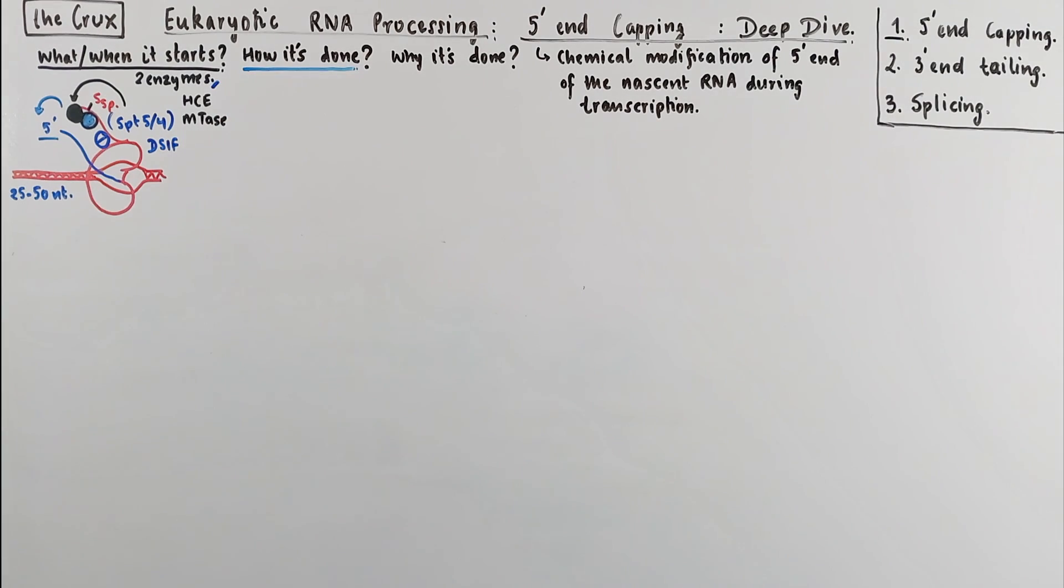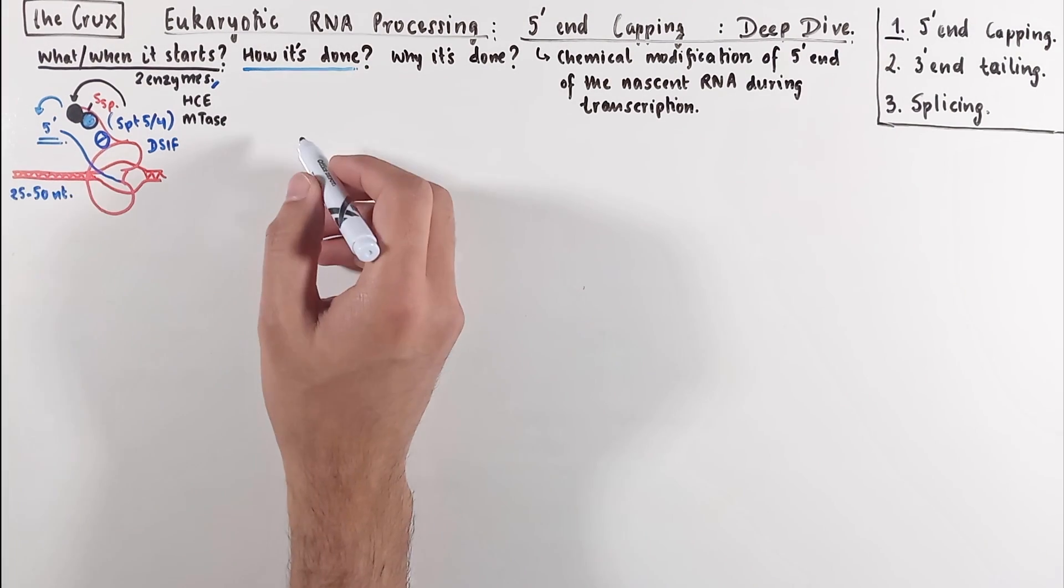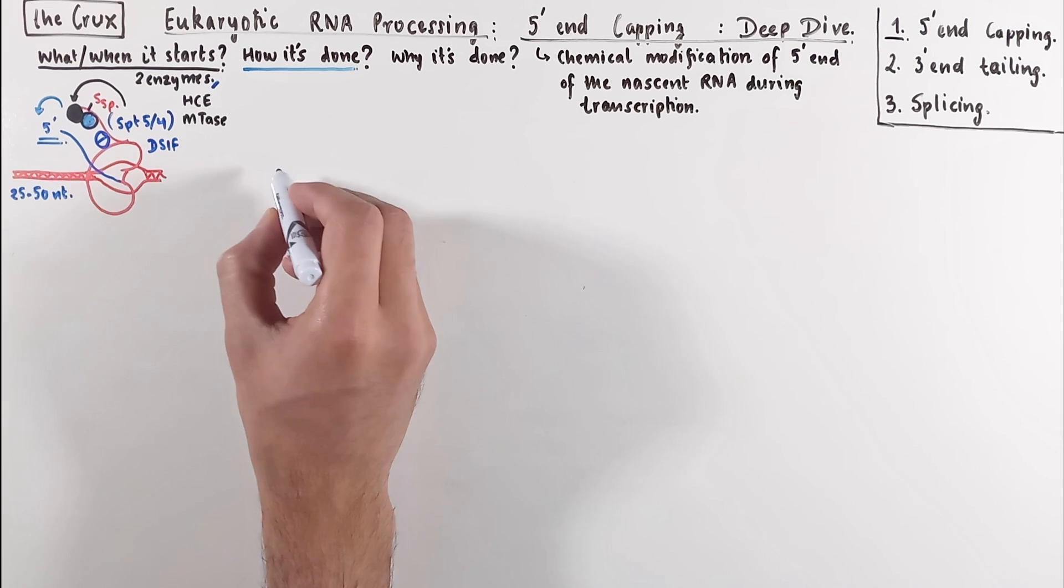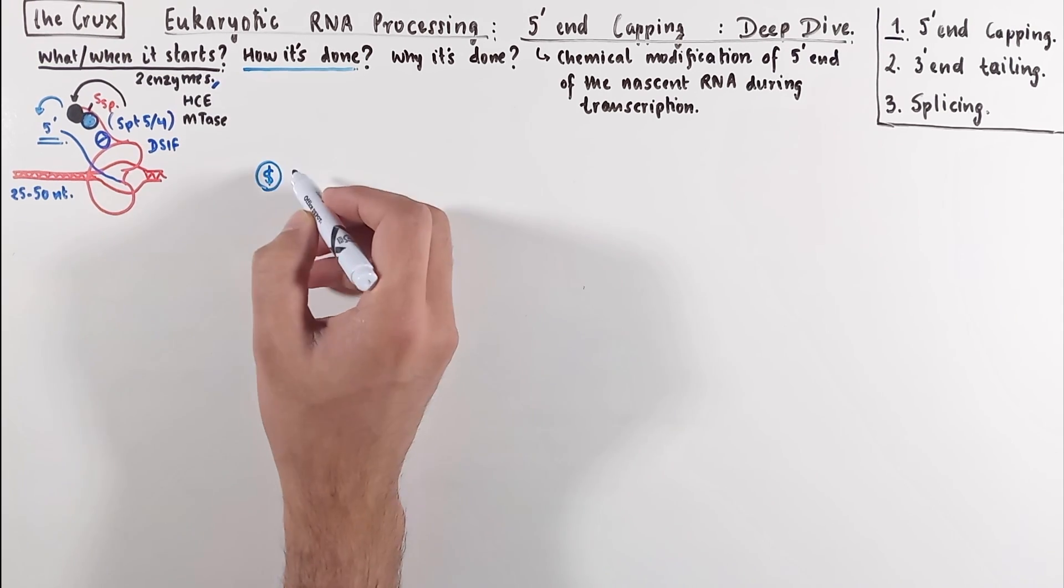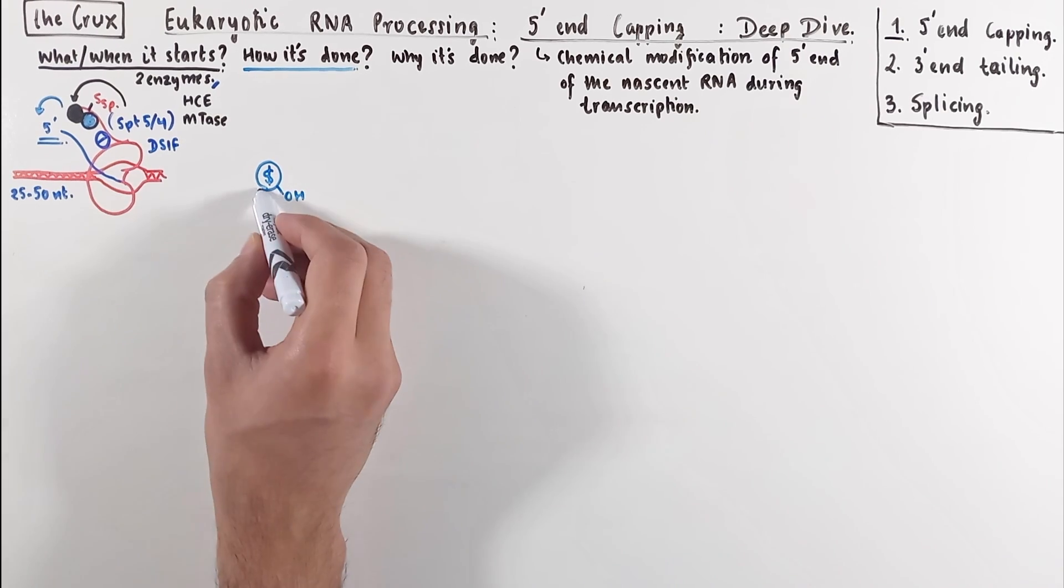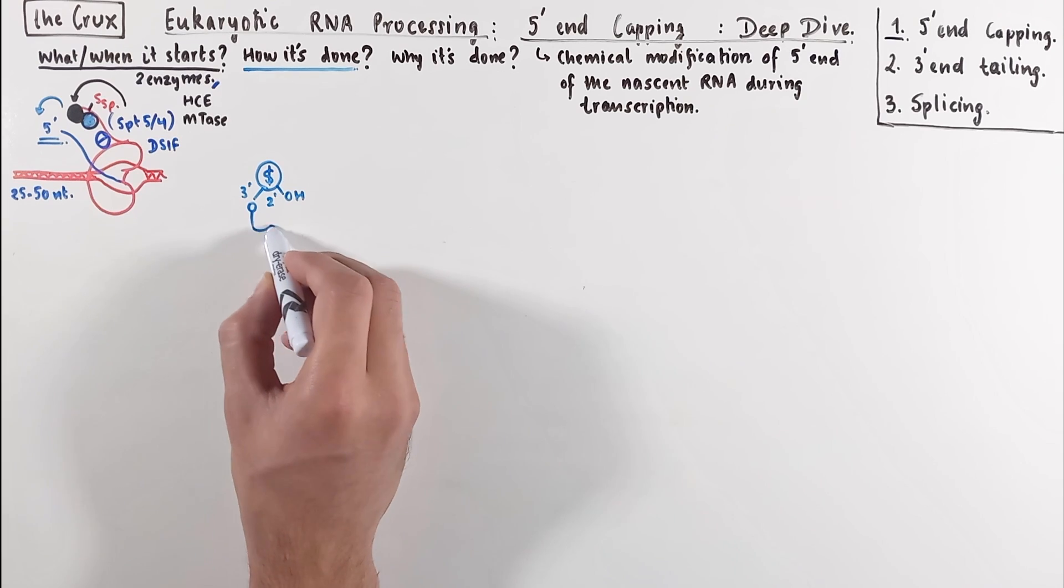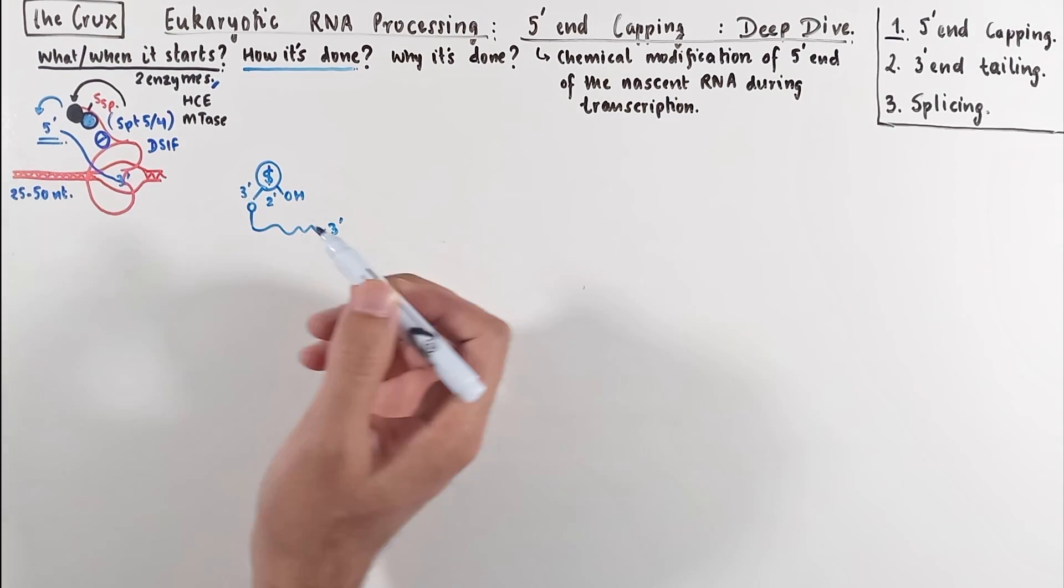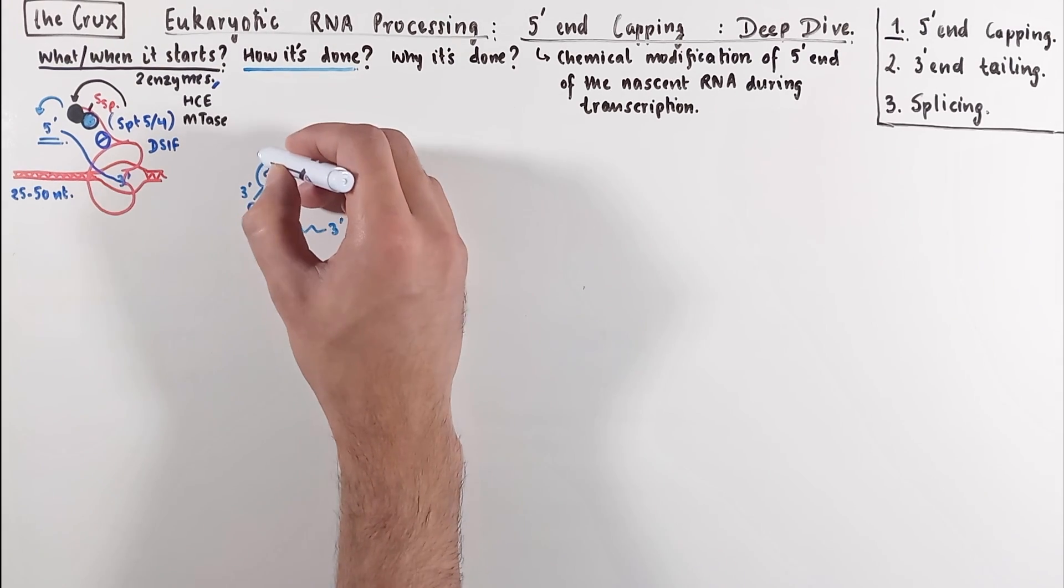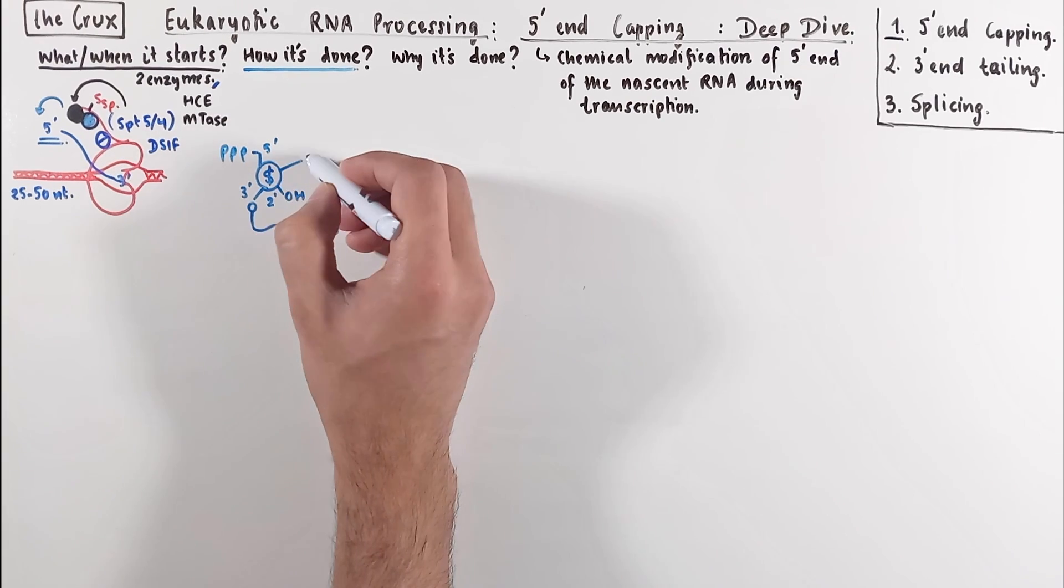Now let's see how these enzymatic activities form the cap. I'm going to zoom in into the five prime end of the RNA. I'm gonna draw out a rough sketch of the first nucleotide of the RNA. The sugar in the backbone will be this dollar symbol, so that you don't get confused between the S and a five. The second carbon of this sugar has a hydroxyl group. The third carbon is engaged in a phosphodiester linkage with the next nucleotide that I'm not gonna draw out.